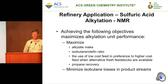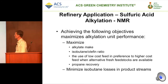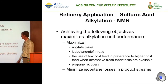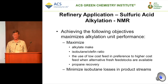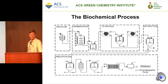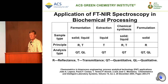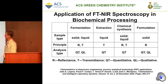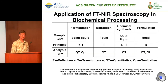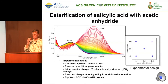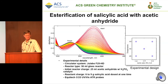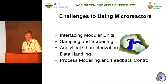Sulfuric acid alkylation can be followed with NMR, tracking the isobutane-to-olefin ratio — moving from low-cost feed to higher-cost feed and looking for propane recovery. For near-infrared, another example in biochemical processing is the esterification of salicylic acid with acetic anhydride, followed using near-infrared spectroscopy.